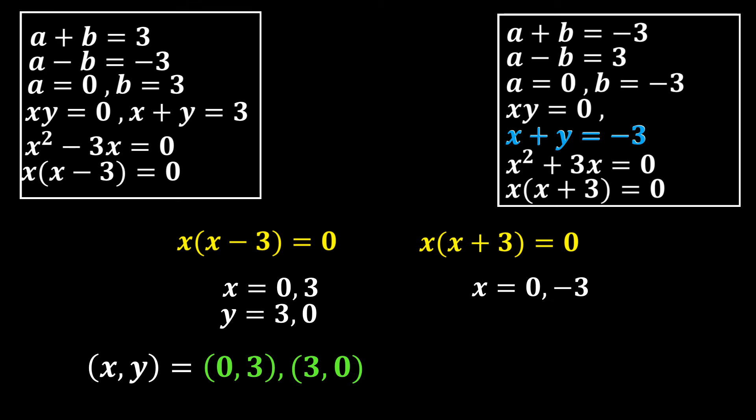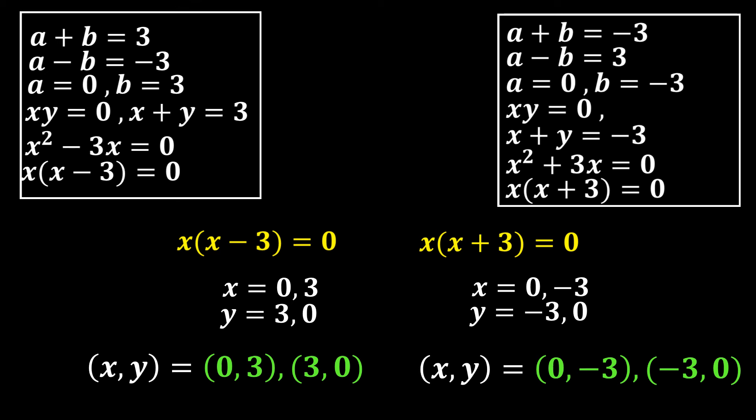From System 4, x(x + 3) = 0, so x = 0 or x = -3. Using x + y = -3: if x = 0 then y = -3; if x = -3 then y = 0. So the ordered pairs are (0, -3) and (-3, 0). Our overall integer solutions to the Diophantine equation are: (0, 3), (3, 0), (0, -3), and (-3, 0).